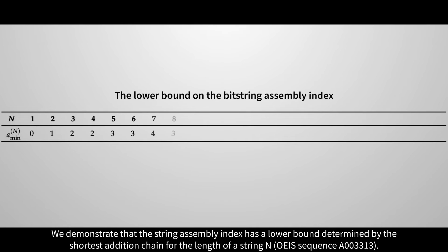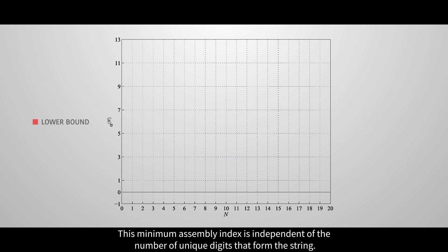We demonstrate that the string assembly index has a lower bound determined by the shortest addition chain for the length of a string, n. This minimum assembly index is independent of the number of unique digits that form the string.